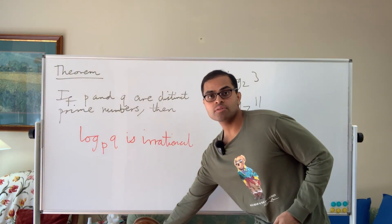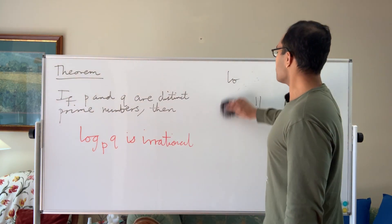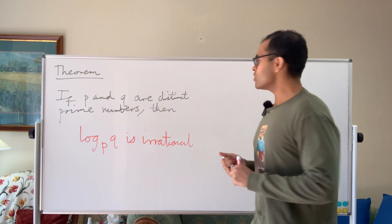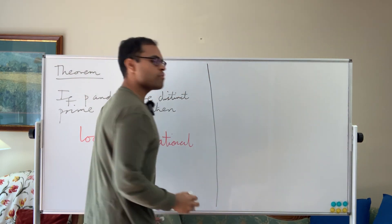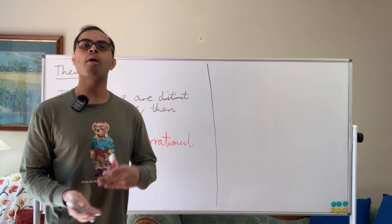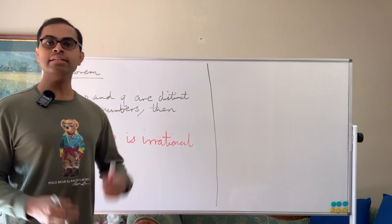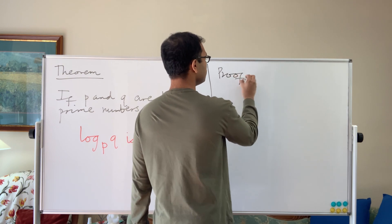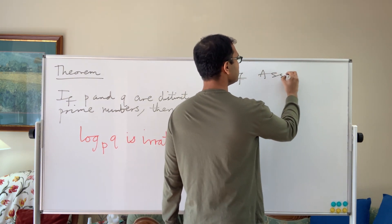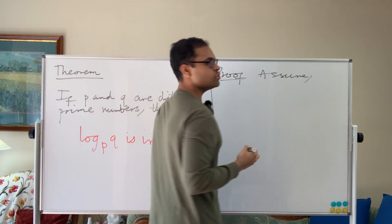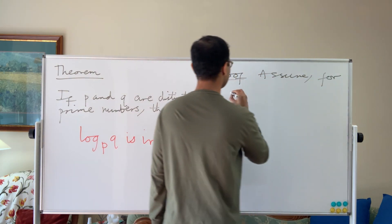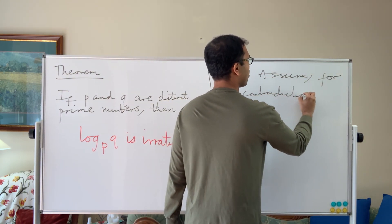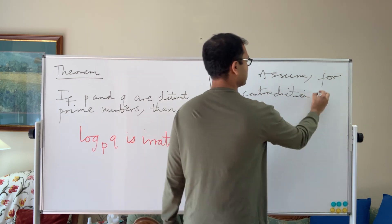So what we want to do is a standard math technique called proof by contradiction. So this is also an introduction to math proofs. We're going to do proof by contradiction. So let's assume for a contradiction that it is a rational number, that it can be written in the form m over n, where m and n are integers and n is non-zero.